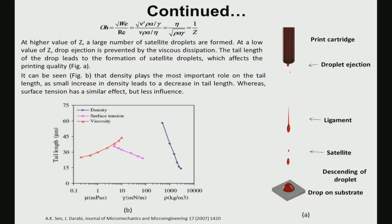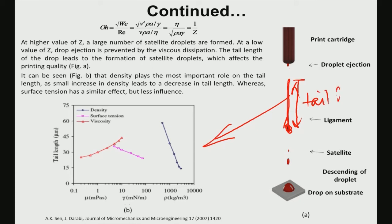The ligament formed during droplet ejection and its disintegration is characterized by tail length. Tail length depends on surface tension and viscosity, which have opposing trends: increasing surface tension decreases tail length, while increasing viscosity increases tail length. A balance between these two competing parameters leads to a printable binder formulation.